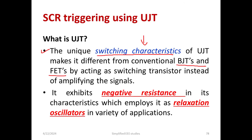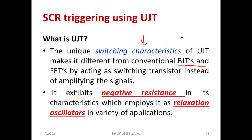The UJT has three regions. Also, a specific feature is that it exhibits negative resistance in its characteristics, which employs the relaxation oscillator. It mainly operates especially in order to trigger the SCR. It mainly focuses on the negative resistance region. At that time, it produces pulses. It will operate in the negative resistance region.